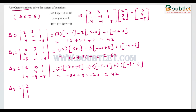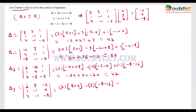Now to find delta 3, we replace the third column with column matrix B [10, 4, -8], keeping [2, 3, 1] and [1, -1, 4]. Expanding by the first row: 2×(8+4) − 3×(−8−16) + 10×(−1+4) gives 24 + 72 + 30, so delta 3 = 126.